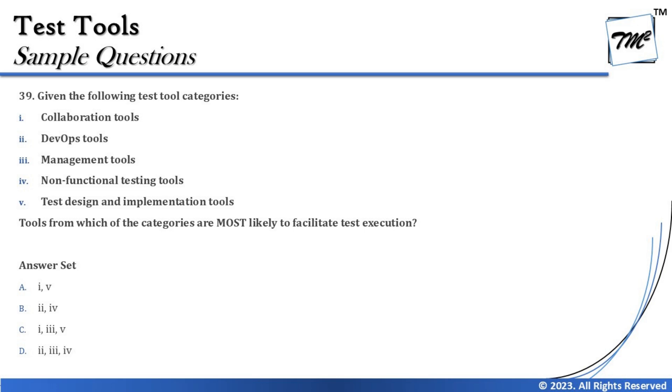Let's get started with the final tutorial. We have Chapter 6 from Set D with two remaining questions. Question 39 asks: given the following test tool categories - collaboration tools, DevOps tools, management tools, non-functional testing tools, and test design and implementation tools - from which categories are tools most likely to facilitate test execution?